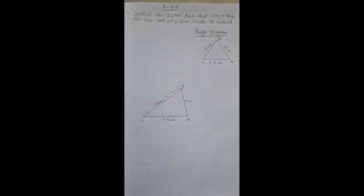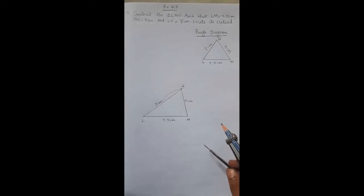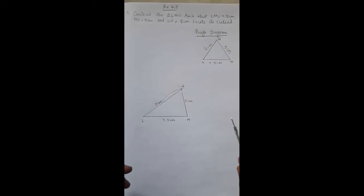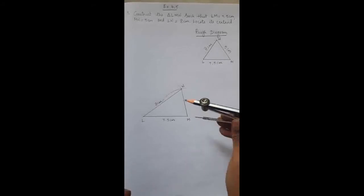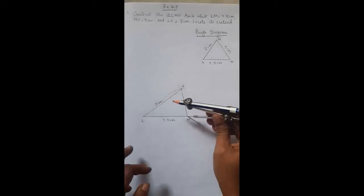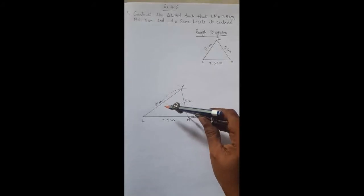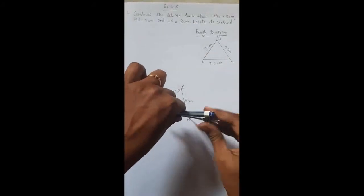Next we need to locate the centroid. To locate the centroid, we need to construct perpendicular bisectors for any two sides. A perpendicular bisector is the line which divides a given line segment into two equal parts. Let me construct the perpendicular bisector for side LM first.